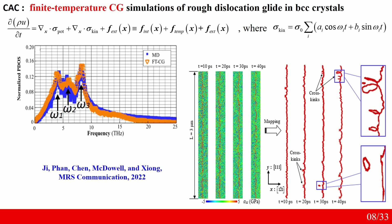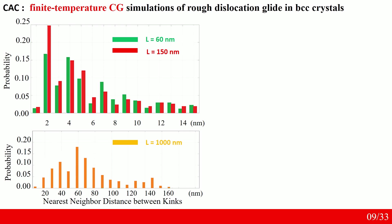We need to quantitatively justify the results. The first quantitative study is kink separation distribution analysis. We tried different dislocation line lengths — 60 nm, 150 nm, 1000 nm, and almost one micron. The separation between kinks, meaning the nearest-neighbor distance, follows a distribution: shorter, medium, and very long. As we increase the dislocation line length, the nearest-neighbor distance between kinks gets larger and larger.